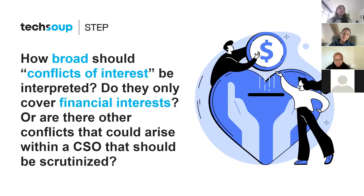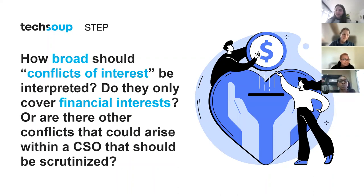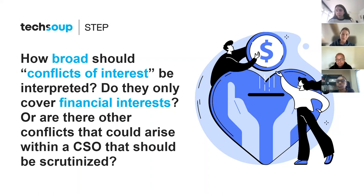How broad should conflicts of interest be interpreted? Do they only cover financial interests, or are there other conflicts that could arise within a CSO? In the U.S., the law really only looks at material financial interests, but the sector actually considers it to be much broader, which I think is correct and more realistic. Conflicts exist beyond the perimeters of money, which I see recognized much more in laws outside of the U.S. than within, although the sector more broadly in the U.S. usually incorporates it into their policies.